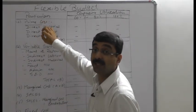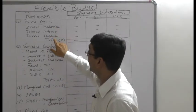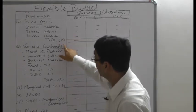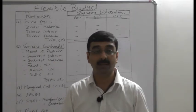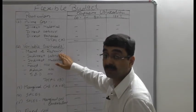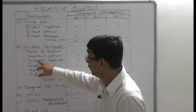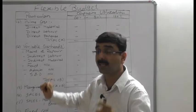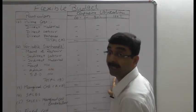The whole cost is divided into three parts. The first part is prime cost — the cost directly incurred for manufacturing a product — which includes direct material, direct labour, and direct expenses. The second part is variable overheads, which include maintenance and repair expenses, indirect labour, indirect materials, factory overheads, admin overheads, and selling and distribution overheads. All variable overheads are segregated from fixed costs and recorded under variable cost as per different capacity utilizations.